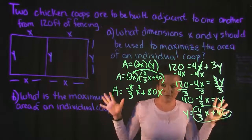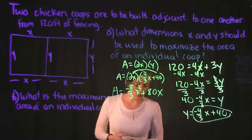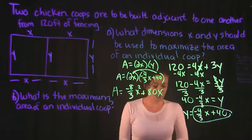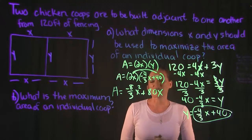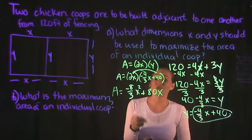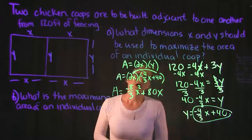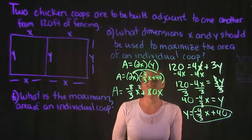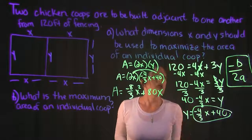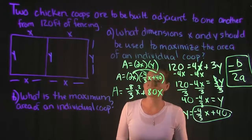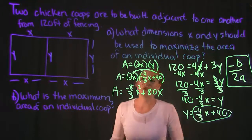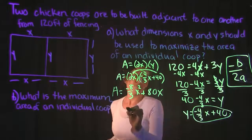This is a quadratic equation, and its graph represents a parabola. The question asks us to maximize the area, and when maximizing a quadratic, we want to find the vertex — that maximum point. The way to find the vertex of an equation in this form is to use the formula negative B over 2A, which gives us the X value of the vertex.